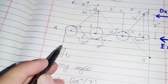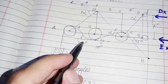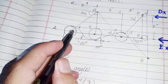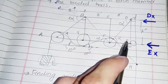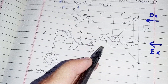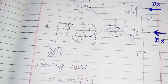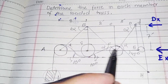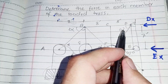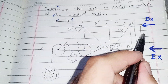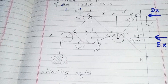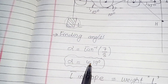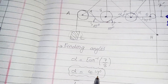The cable makes a 10-degree angle with the x-axis. First, we need to find angle alpha. Using tangent alpha equals opposite side divided by adjacent side: the opposite side is 7 feet and the adjacent side is 8 feet, so 7 divided by 8 gives alpha equal to 41.19 degrees.